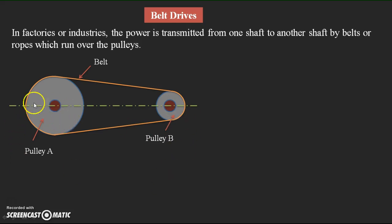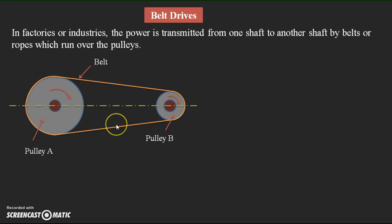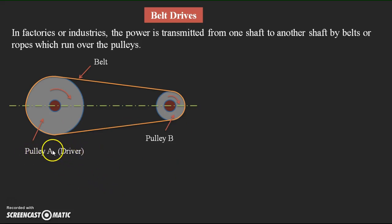If the shaft is rotating in one direction, the belt also moves in that same direction, causing pulley B to rotate in the same direction. This is an example of an open belt drive. In an open belt drive, whichever direction the first pulley rotates, the second pulley also rotates in the same direction. The pulley initiating the rotation is called the driver pulley, because we are transferring the rotary motion from this shaft — so it initiates the rotation.